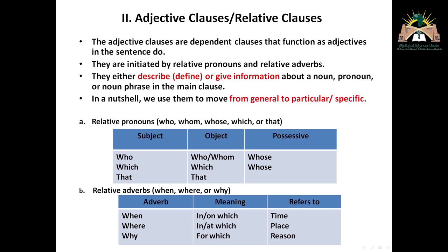In a nutshell, we use them to move from general to particular or to specific. Because we have the general meaning in the main clause. But if we need to move from general to particular, we need to refer to the dependent clause to define, or to describe, or to give extra information. This is why we refer to adjective clauses.